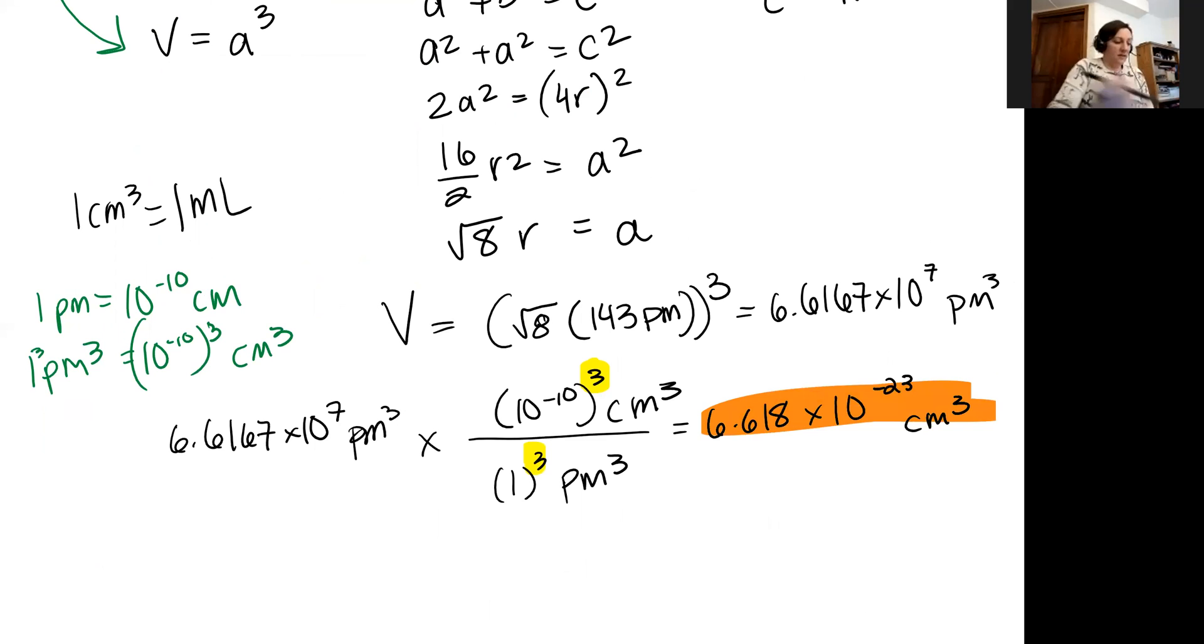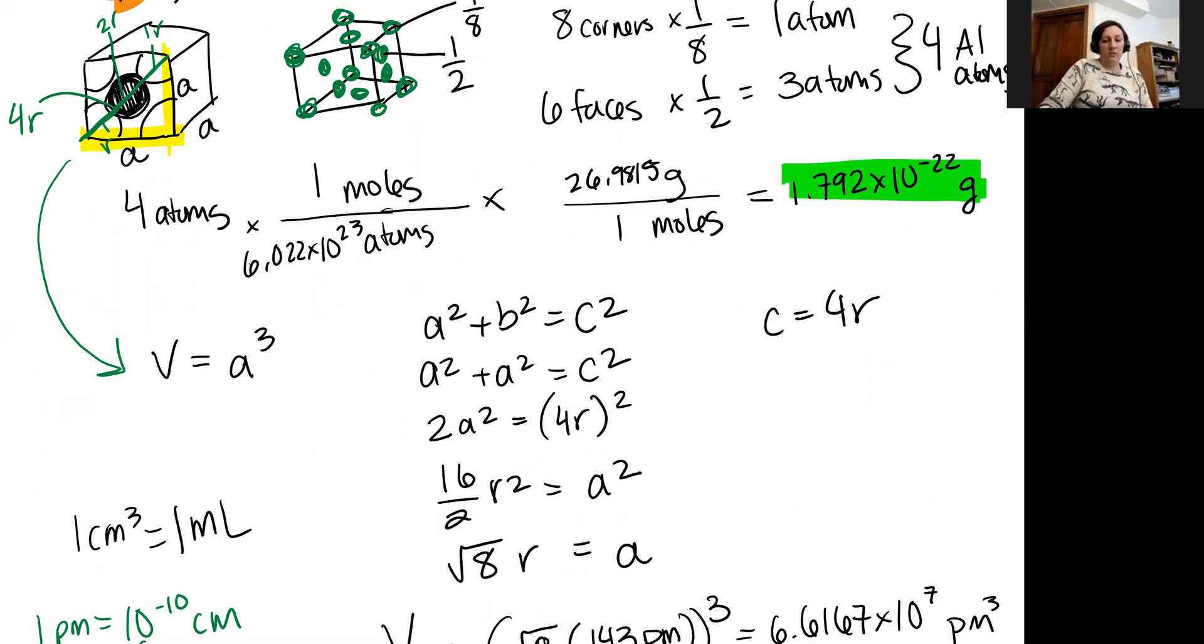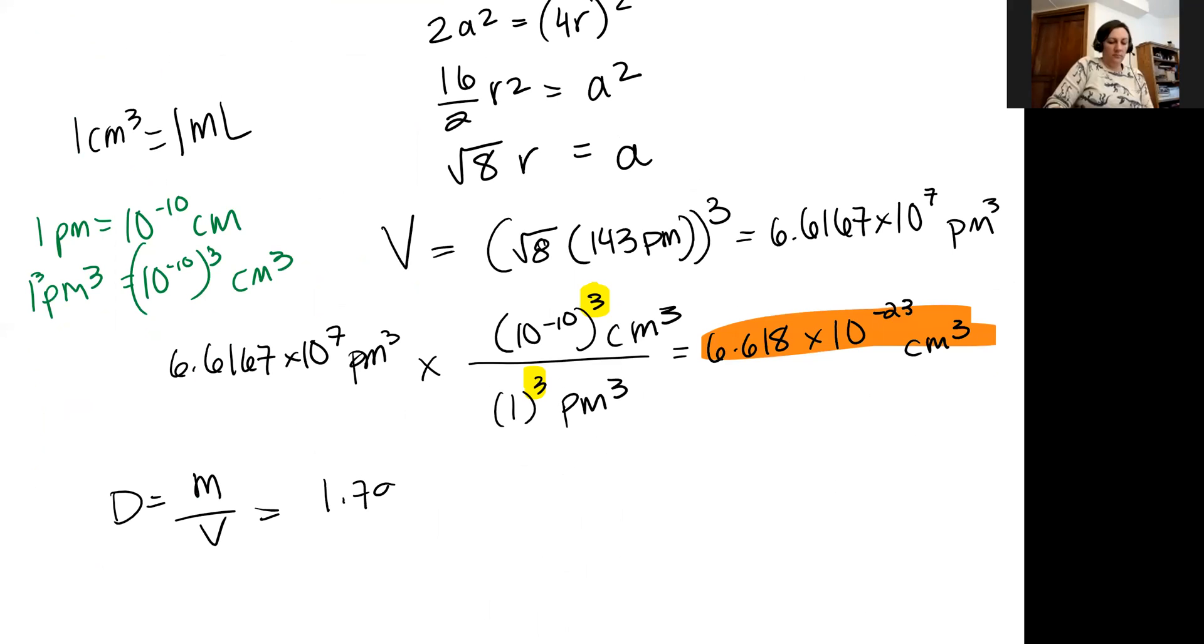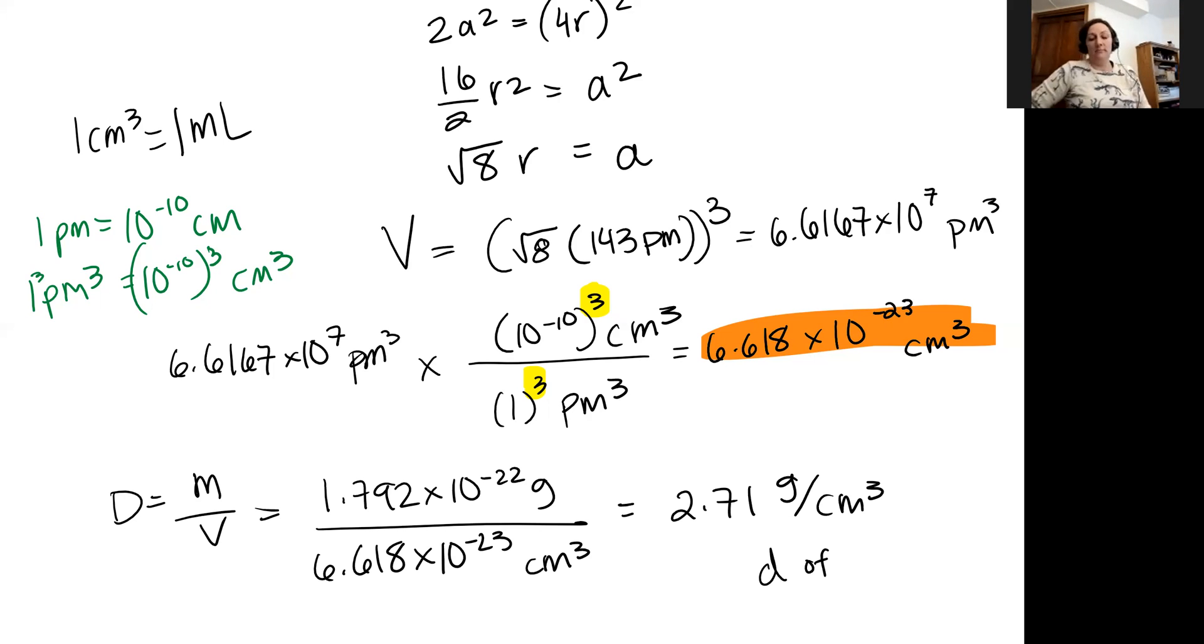So then let's solve this problem. Density is going to be equal to mass over volume. The mass that we calculated is this 1.792 times 10 to the negative 22 grams. So we'll plug that in. And our volume we just calculated to be 6.618 times 10 to the negative 23 centimeters cubed, or milliliters, whatever your preference. If I plug this into my calculator, I'm going to end up with a value that is 2.71 grams per centimeter cubed, which matches the density of aluminum nicely. Okay. So.